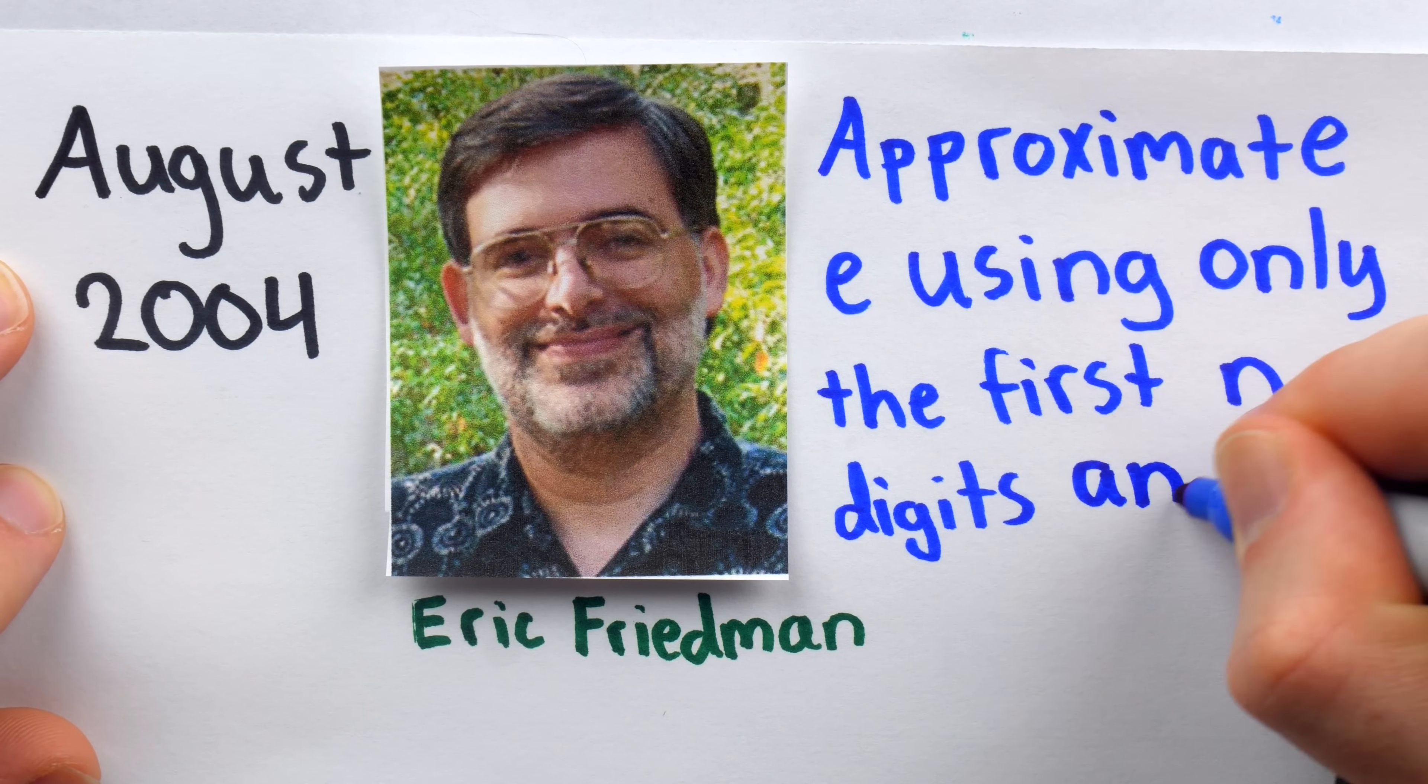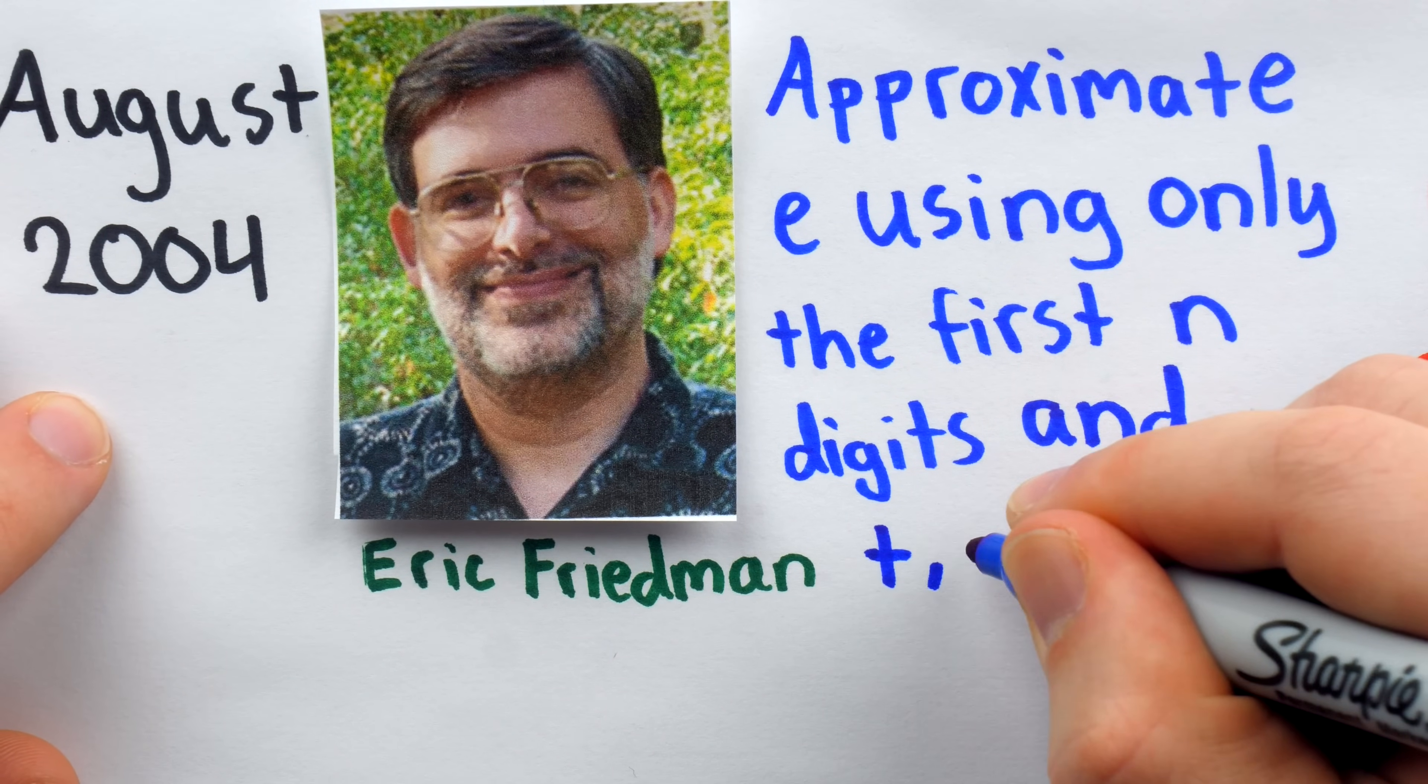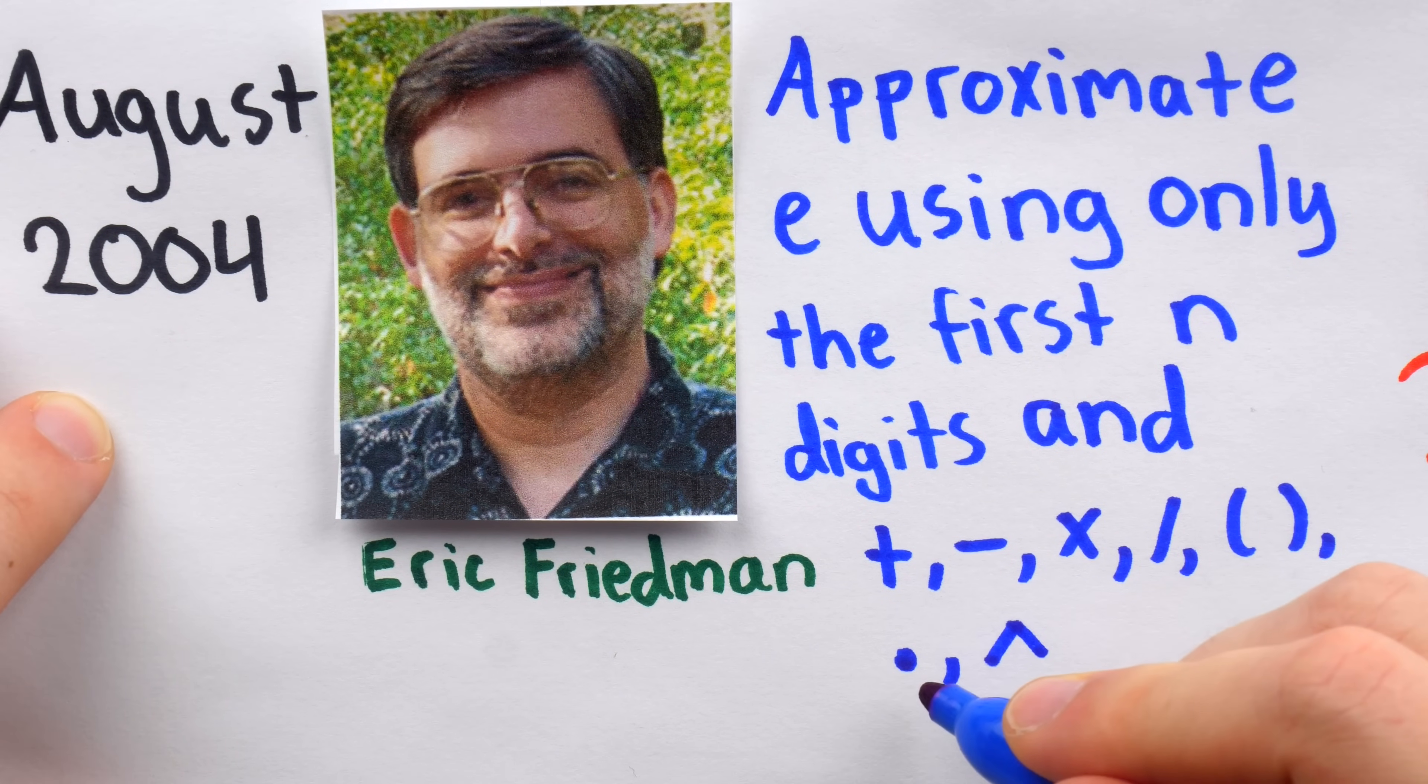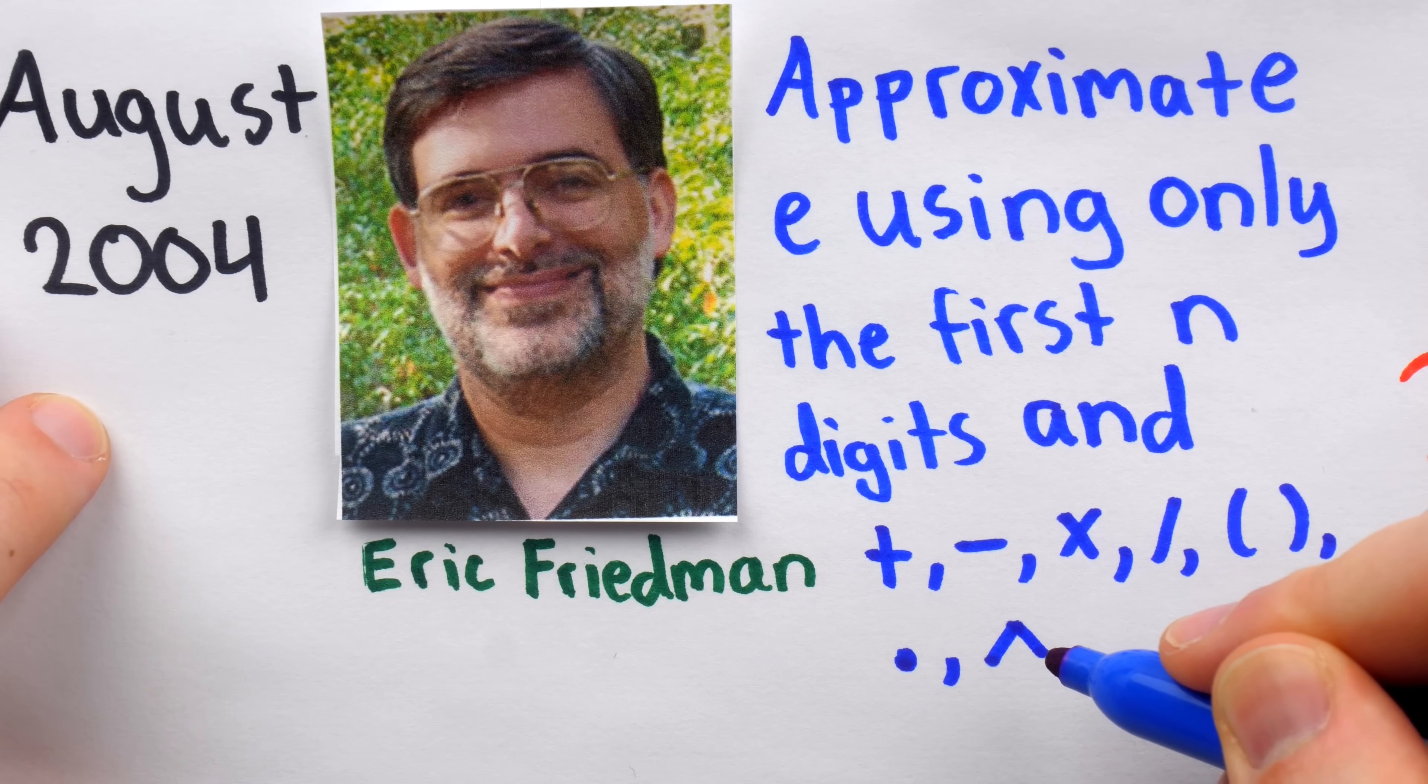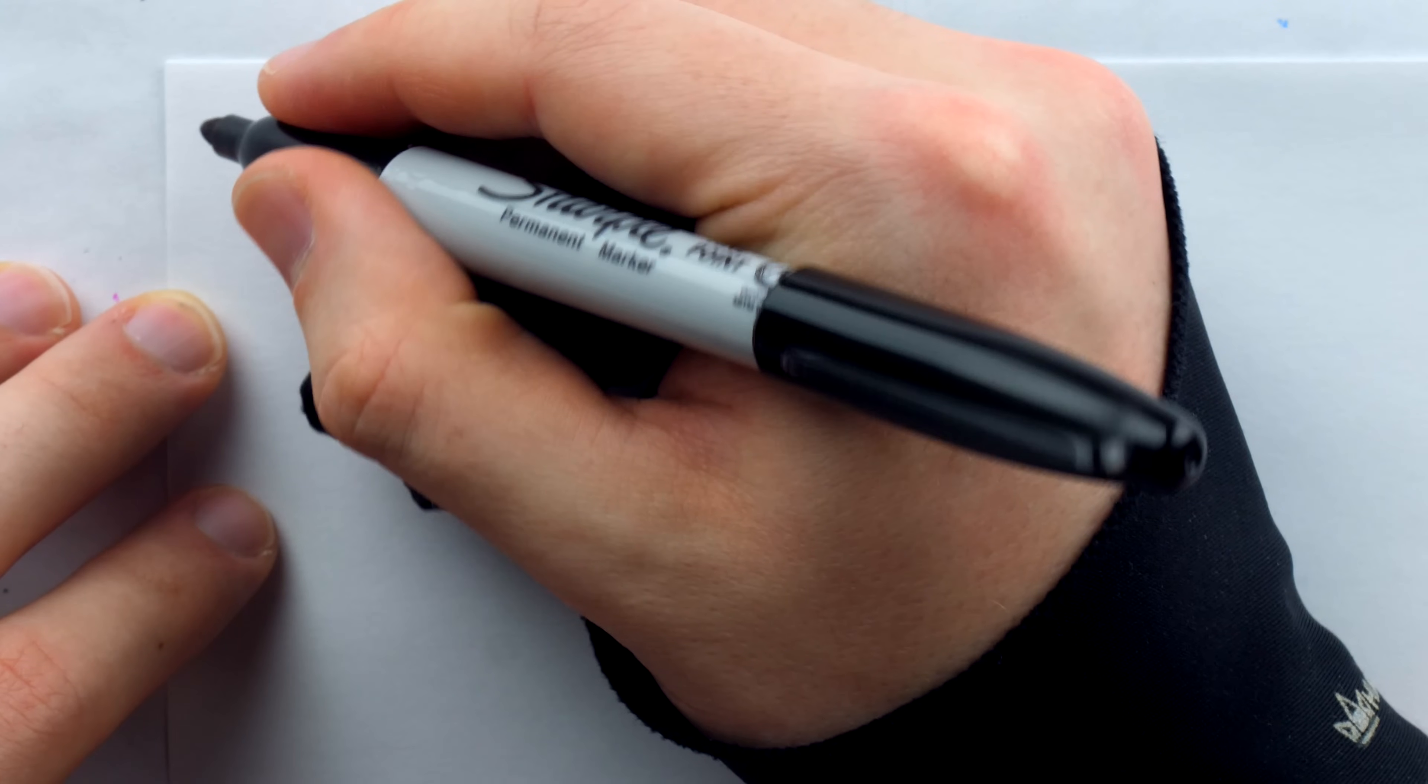The challenge was to approximate e using only the first n digits. And the permitted symbols, or mathematical operations, were addition, subtraction, multiplication, division, grouping, a decimal point, and the caret or exponents. This was written in plain text, which is why I write it this way. So, for example, for n equals 1, we're only allowed to use the first digit, which is 1, to approximate e.